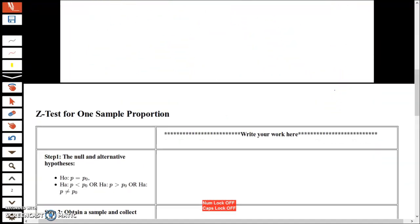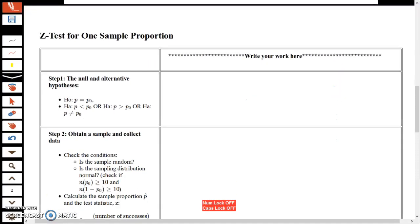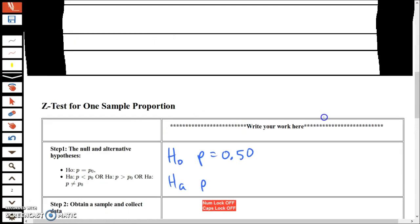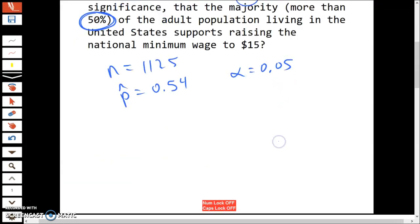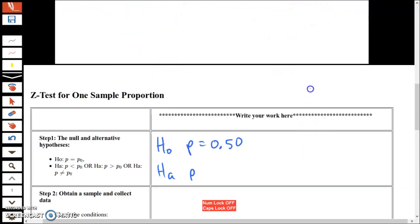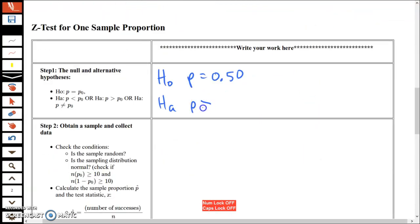Step one: write your null and alternate hypothesis. The null is always p equals something, so H₀: p = 0.50. The alternate is what we suspect to be true. The question was about a majority. Majority means more than 50%, so the alternate is Hₐ: p > 0.50, where p is the population of all adults in the United States.